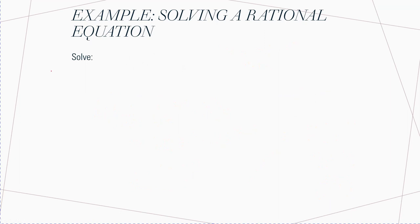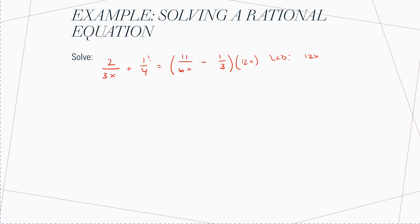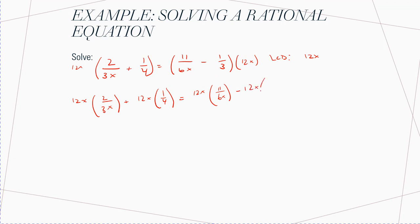Let's try another one: 2 over 3X plus 1 fourth is equal to 11 over 6X minus 1 third. You've got to find the LCD. The constants 3, 4, and 6 give a coefficient of 12, and there's an X, so the LCD is 12X. Multiply each side by 12X: you get 12X times 2 over 3X plus 12X times 1 fourth equals 12X times 11 over 6X minus 12X times 1 third.